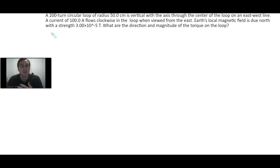So let's look at this problem. We have a 200 turn circular loop of radius 50.0 centimeters is vertical with the axis through the center of the loop on an east-west line. The current of 100.0 amperes flows clockwise in the loop when viewed from the east. Earth's local magnetic field is due north with a strength of 3.00 times 10 to the minus 5th Teslas. What are the direction and magnitude of the torque on the loop?